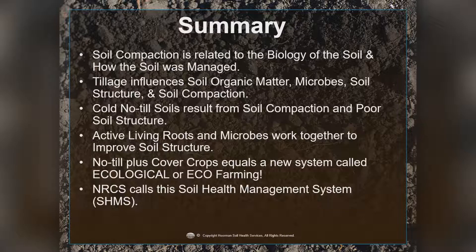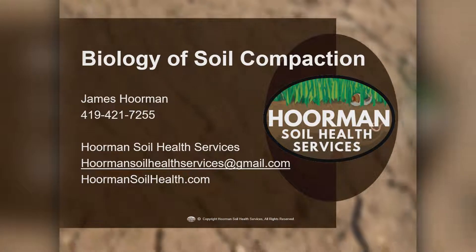Overall summary: soil compaction is related to the biology of the soil and how it was managed. Tillage influences how much soil organic matter, how many microbes, what types of microbes, and has an impact on soil structure and compaction. Cold no-till soils are a result of soil compaction and poor soil structure — to make soils warm and moist, you have to add live roots and go to long-term no-till. Active living roots and microbes work together to improve soil structure and form macroaggregates. The best approach is a combination of no-till plus cover crops — what we call ecological farming — which NRCS calls a soil health management system.